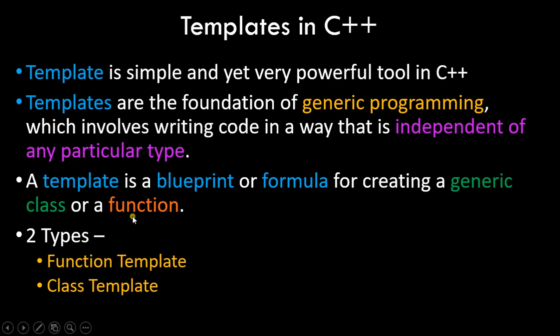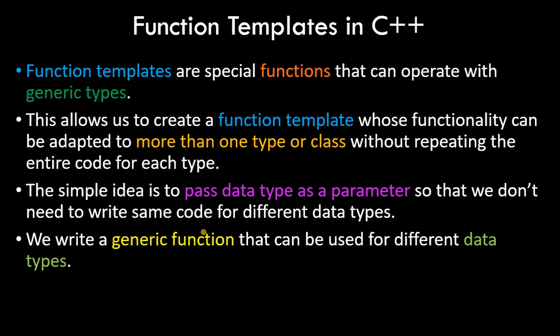There are two different types of templates in C++ programming. The first is function template and the second is class template. In this video tutorial we'll be focusing on function template and we'll see a program. In the next video tutorial we'll go ahead with class template. Function templates are special functions that can operate with generic types — types which do not have a predefined data type — allowing us to create a function template whose functionality can be adapted to more than one type without repeating the entire code for each type.